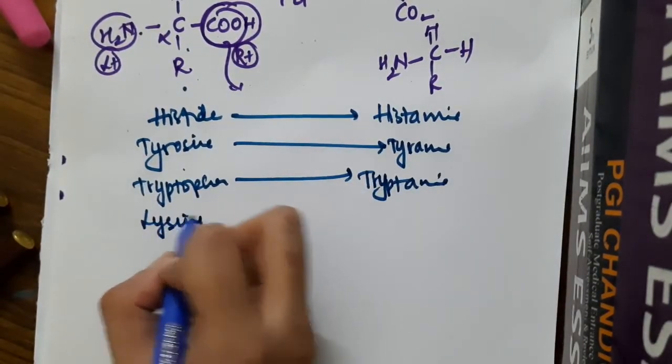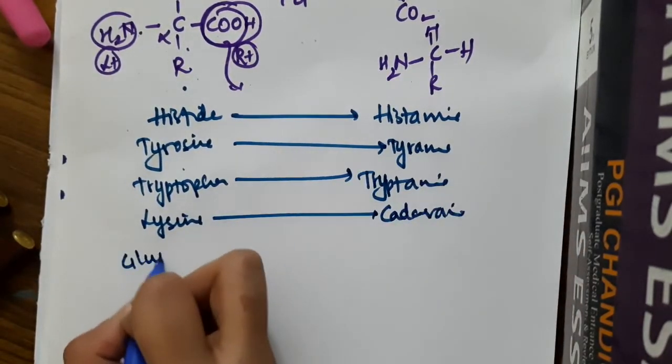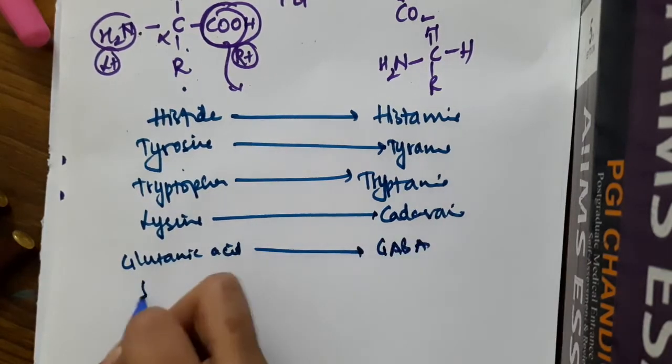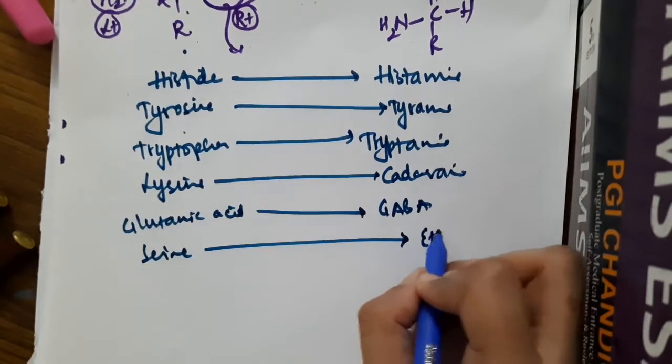Lysine on decarboxylation forms cadaverine. Glutamic acid on decarboxylation forms GABA. Serine on decarboxylation forms ethylamine.